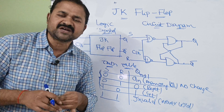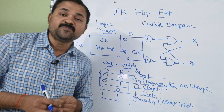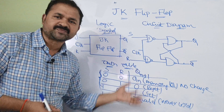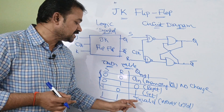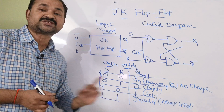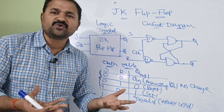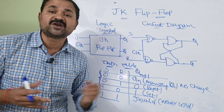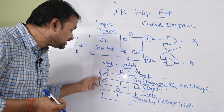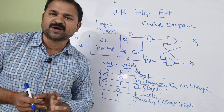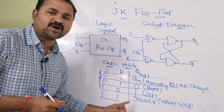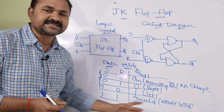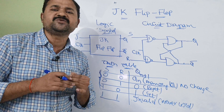What is the drawback of SR flip-flop? In SR flip-flop, if the inputs are 1, 1 — that means if S value is 1 and R value is 1 — then the output is invalid. We never use this combination. So in order to overcome that problem we can use JK flip-flop. In JK flip-flop we can use the 1, 1 combination. Remaining three combinations are similar to SR flip-flop only. So only the 1, 1 combination is different.